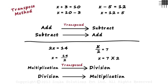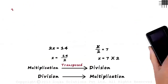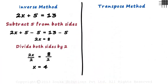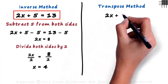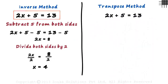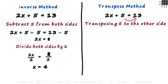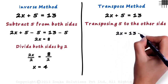Let us solve the same equation we solved using the inverse operations method: 2x plus 5 equals 13. Our aim is to keep just the variable on the left hand side. So we transpose 5 to the other side. Since it is added on the left hand side, we transpose it to the right hand side and subtract it from 13.